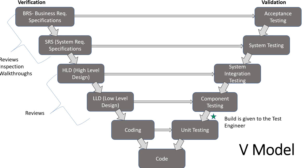The verification and validation parts are associated with each other. The BRS is associated with acceptance testing, SRS is associated with system testing, high level design is associated with system integration testing, low level design is associated with component testing or module testing, and coding is associated with unit testing. On the left side - the verification part - there will be reviews, inspections, and walkthroughs on the BRS document, SRS document, design documents, and the code.